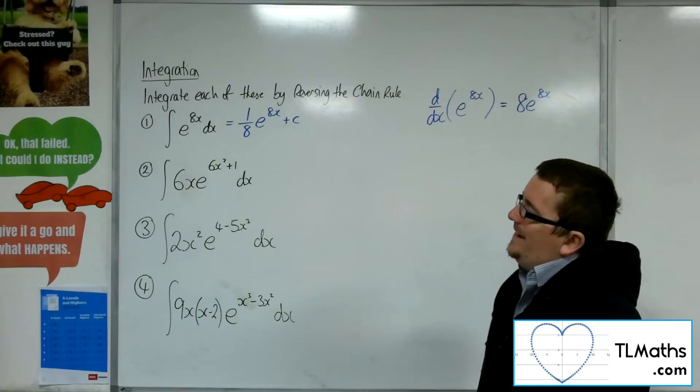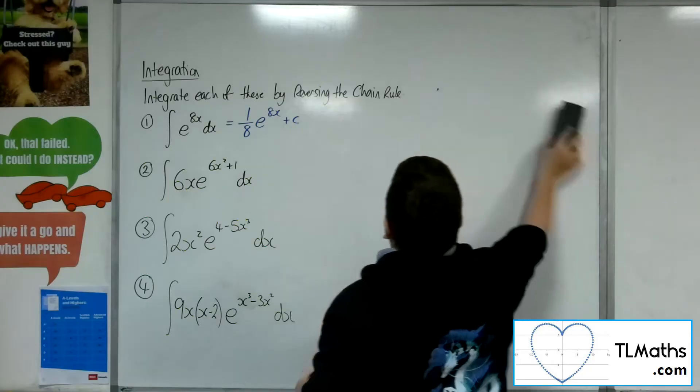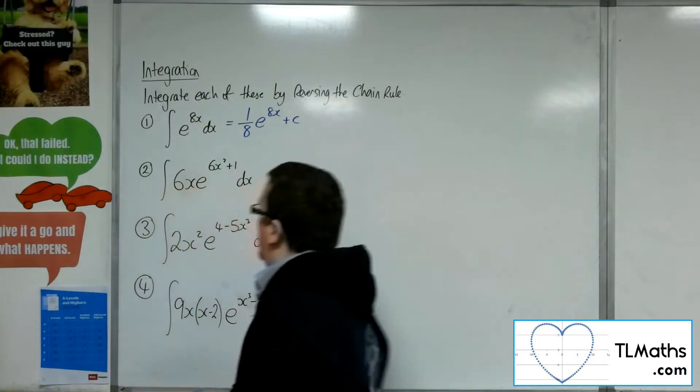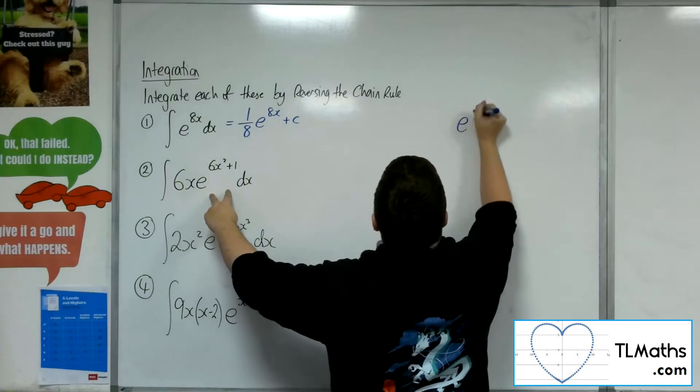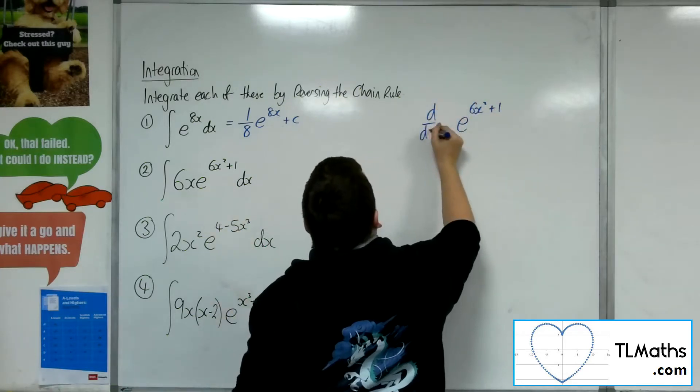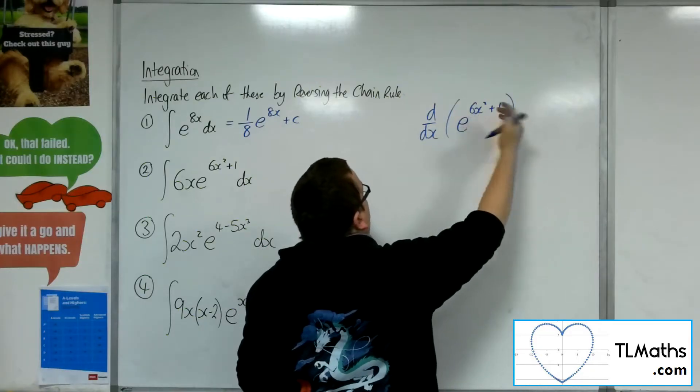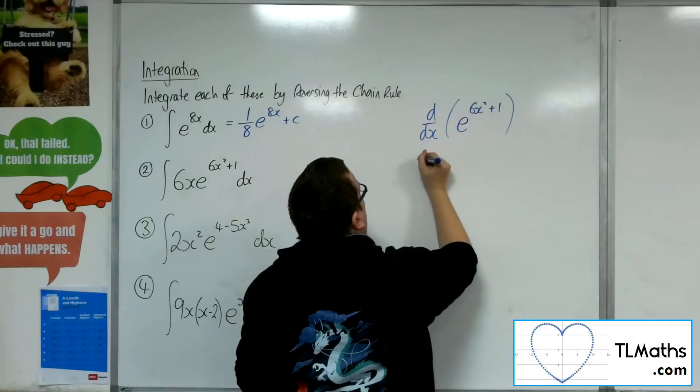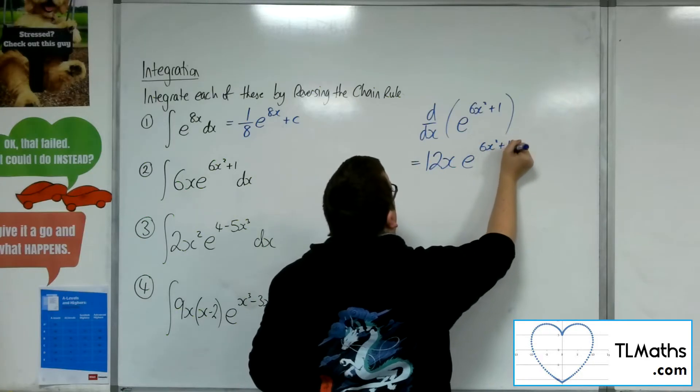6x times e to the 6x squared plus 1. OK, so if I consider e to the 6x squared plus 1, and I differentiate that, then the derivative of what's inside comes outside, so that's 12x, and I get e to the 6x squared plus 1.